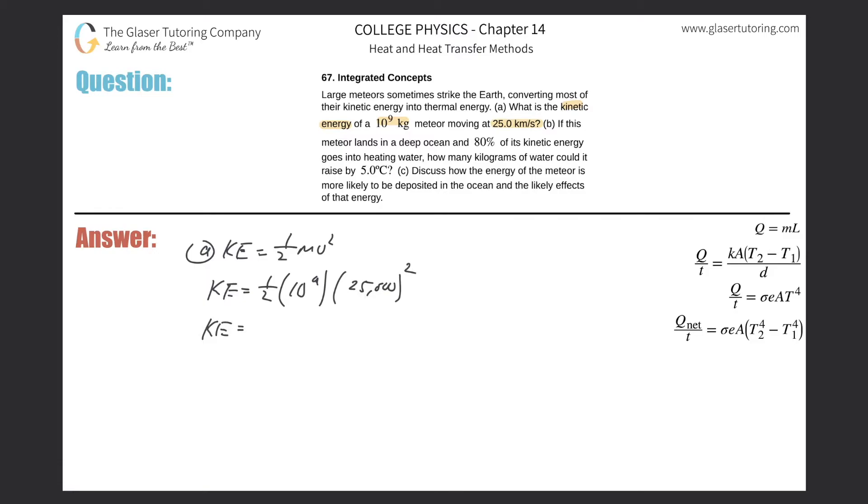And let's see what we get. It's going to be quite a large number, right? So we're going to get 0.5 times 10 raised to the 9, then multiplied by 25,000 squared. And here we get about 3.1 times 10 to the 17.